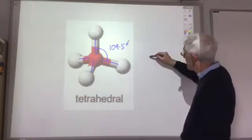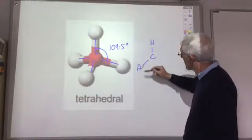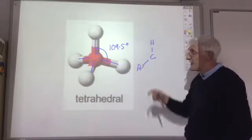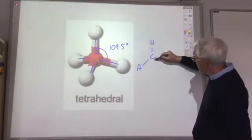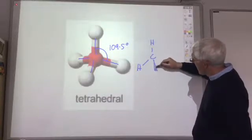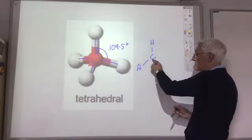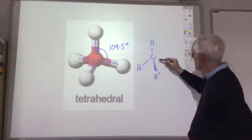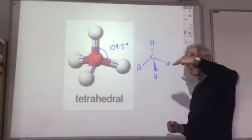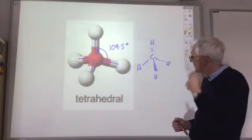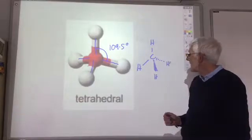Sometimes when we're drawing this, say if it was for methane, these three atoms are supposed to be in the plane of the board. And then this sort of triangle getting bigger and bigger represents a bond coming out of the board towards you. And the dashed line represents a hydrogen atom going behind the board. So very often we draw this 3D-ish representation.